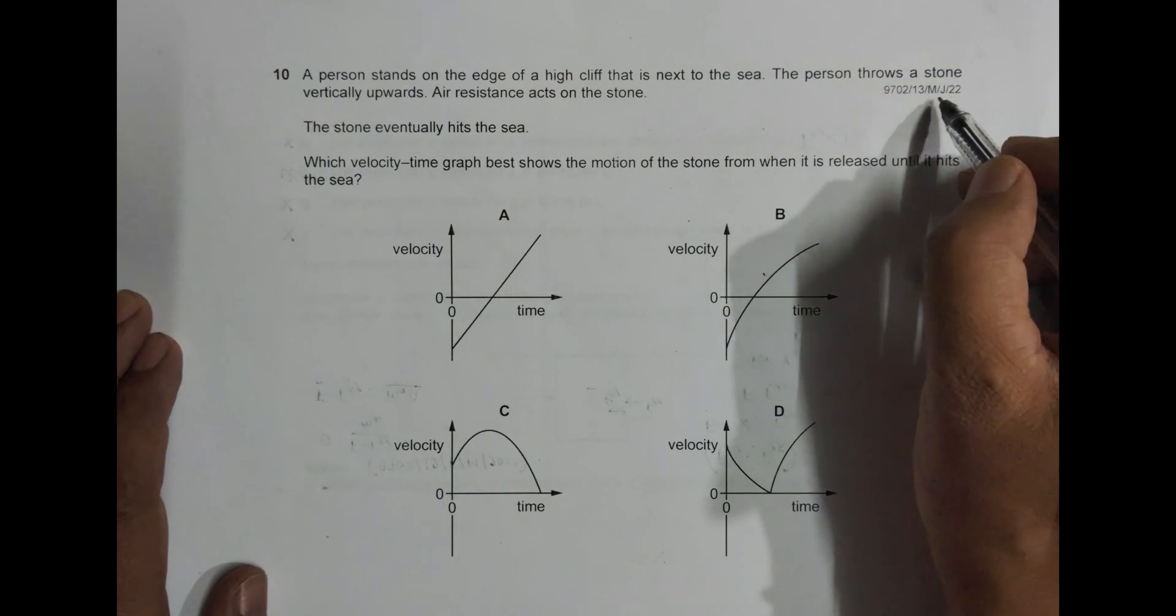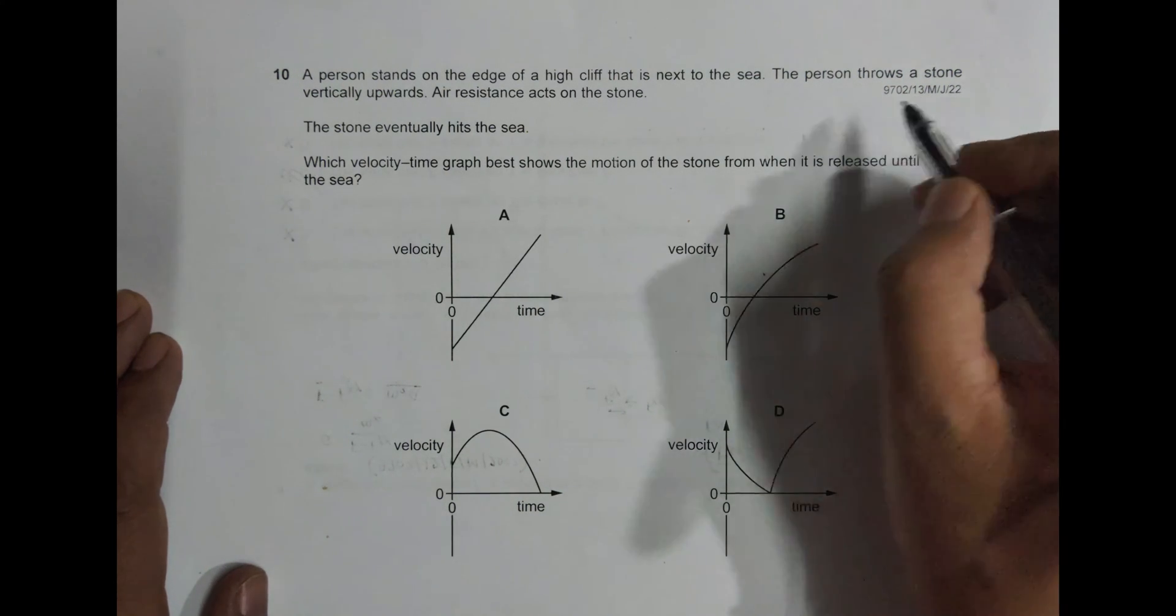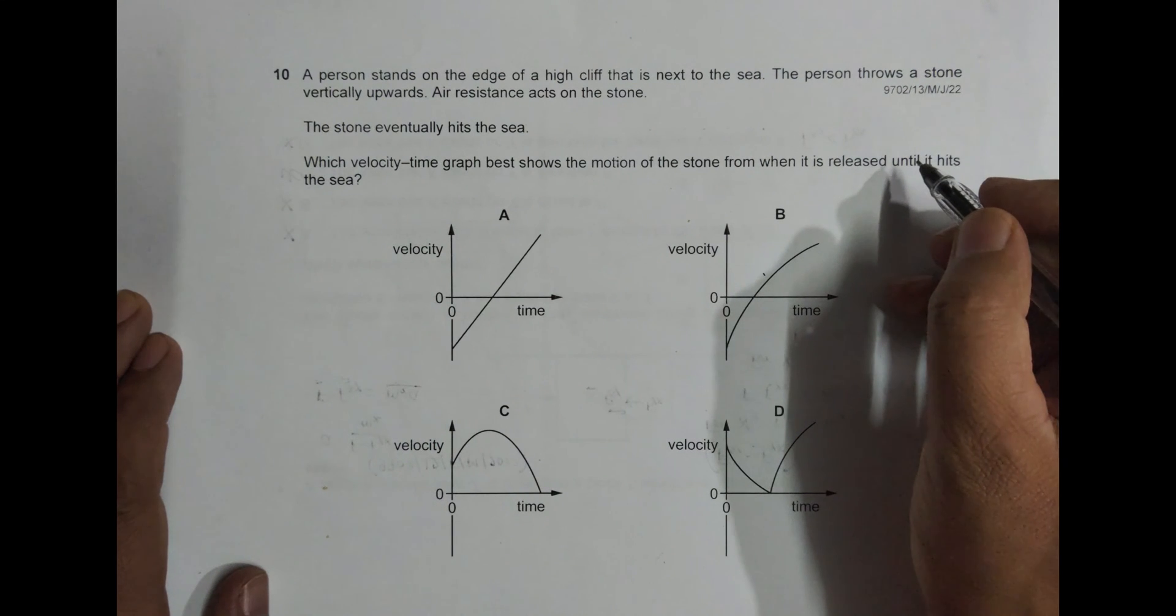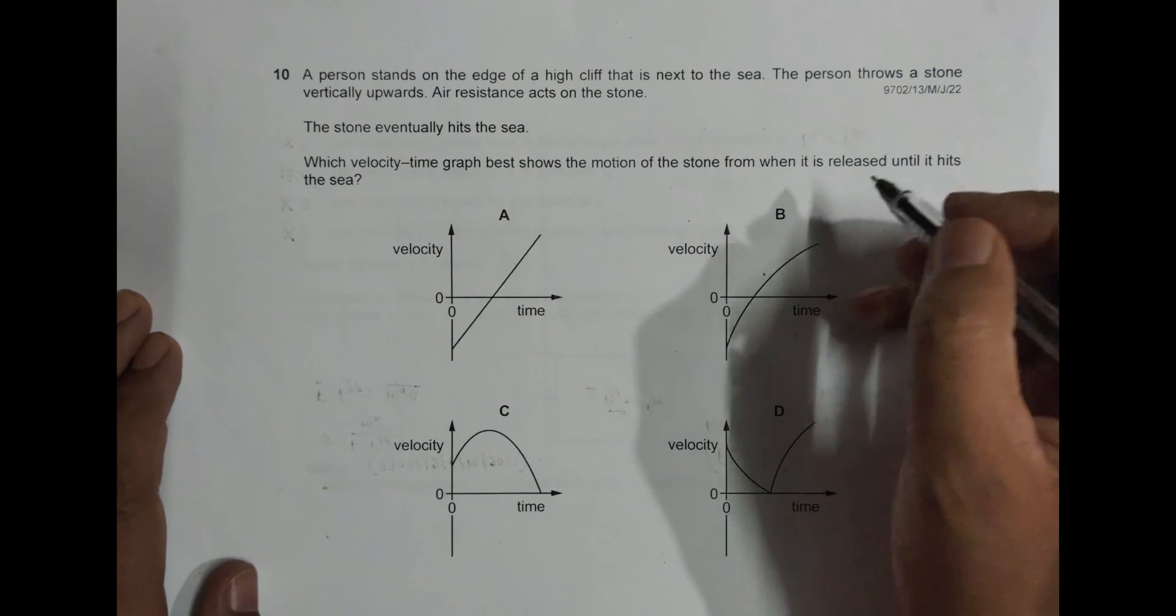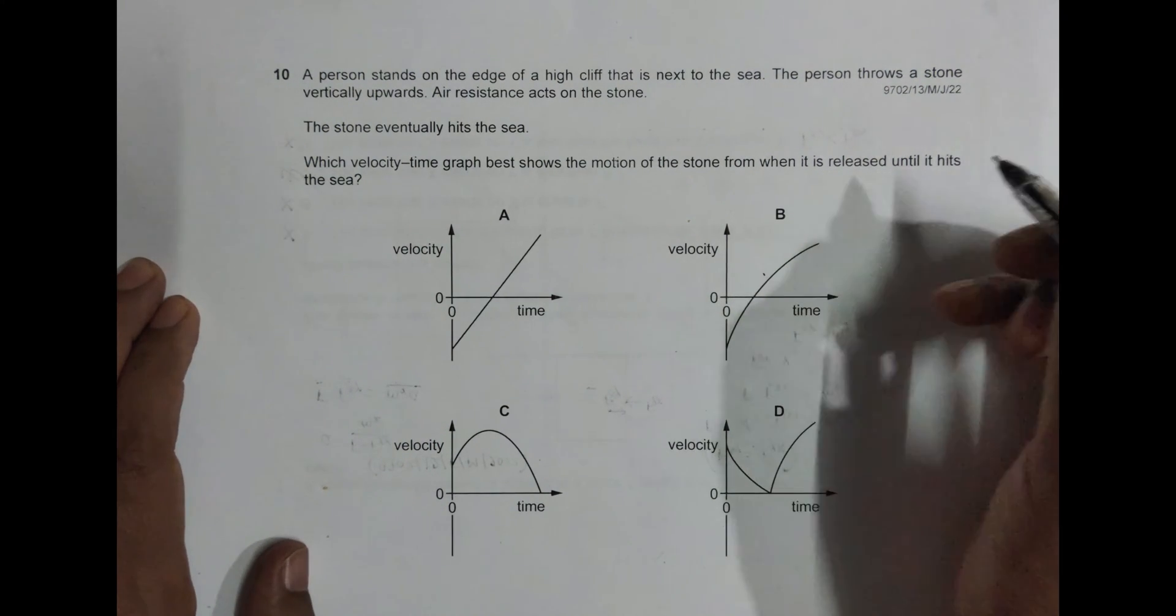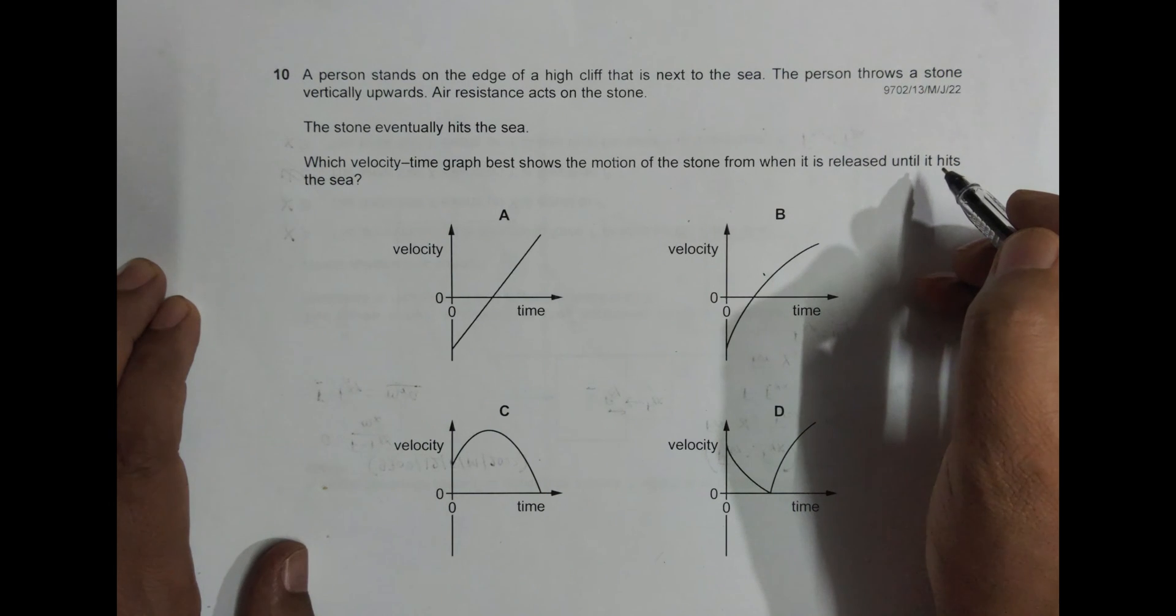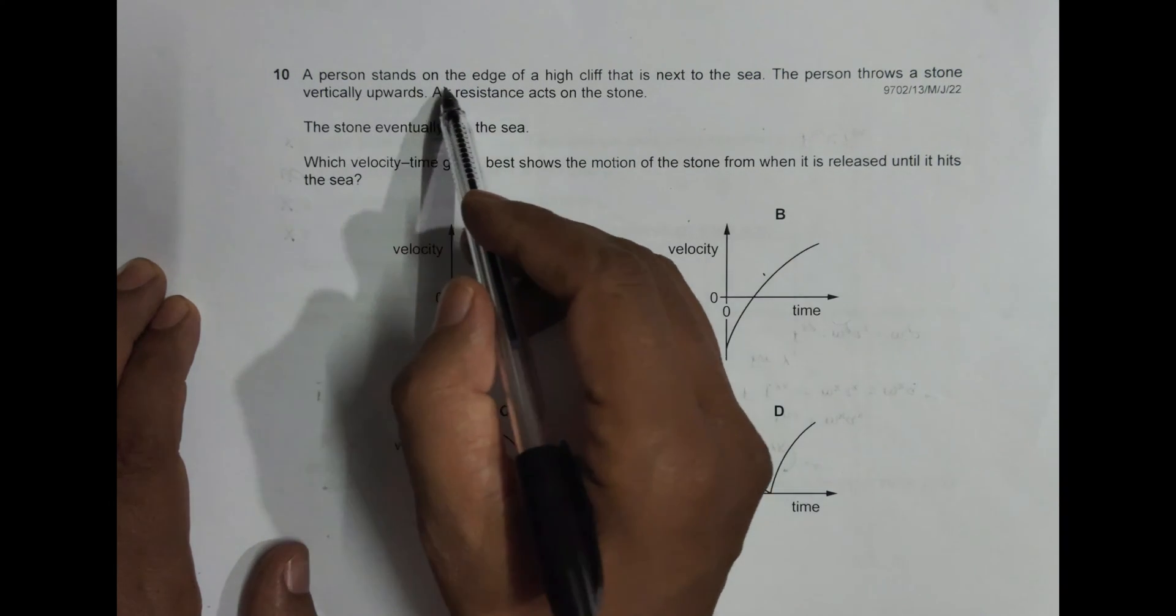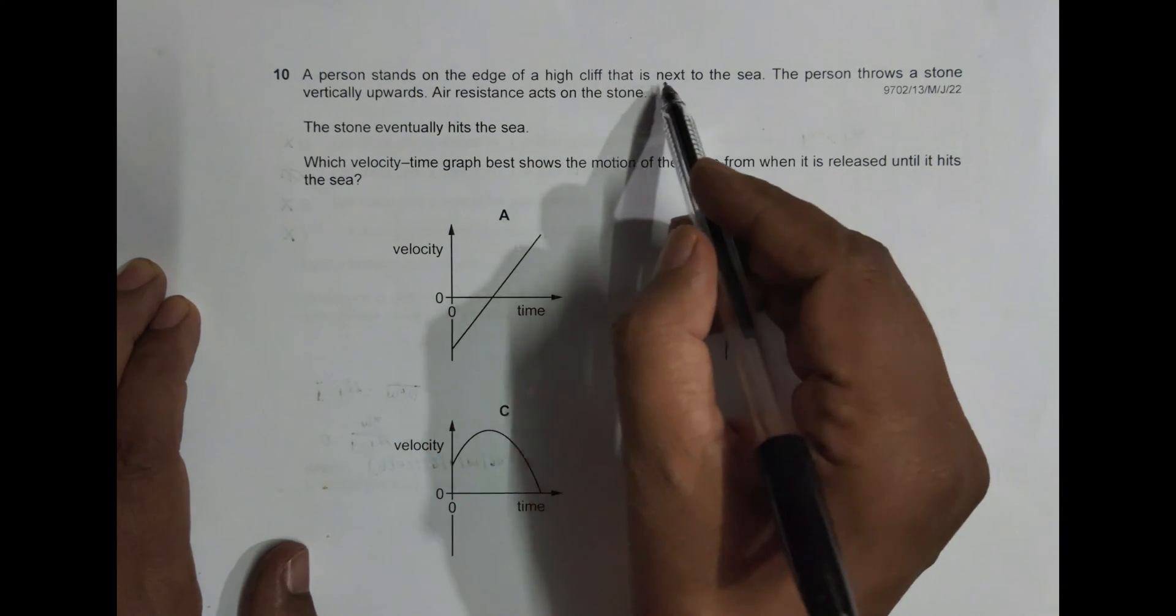Hello folks, this is a 2022 May/June Paper 13, question number 10. This question is concerned with the chapter kinematics, or you can say forces as well because it involves several forces. It says a person stands on the edge of a high cliff next to the sea.